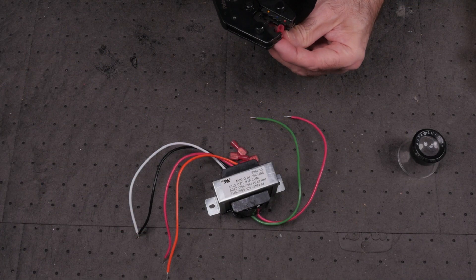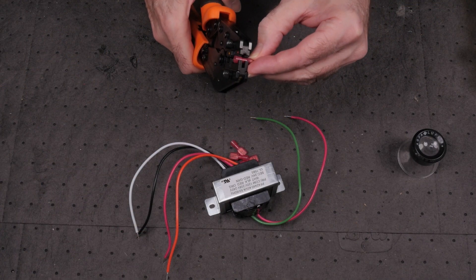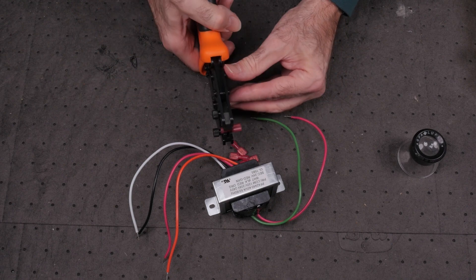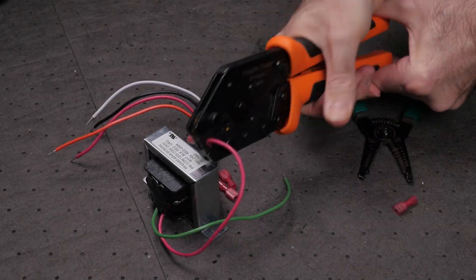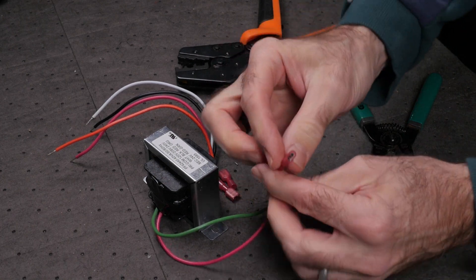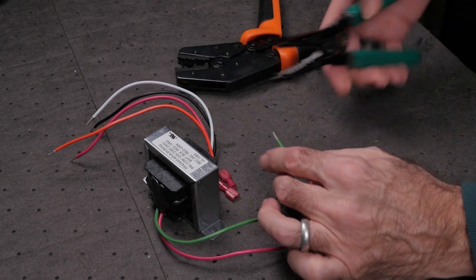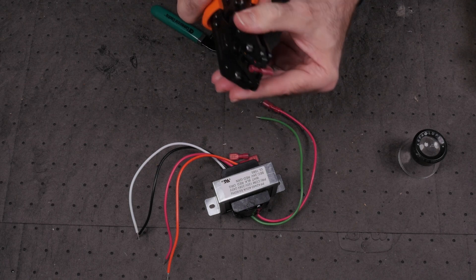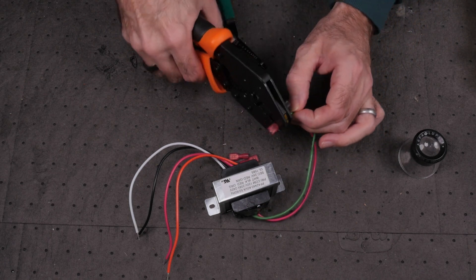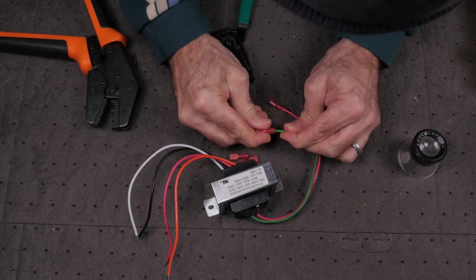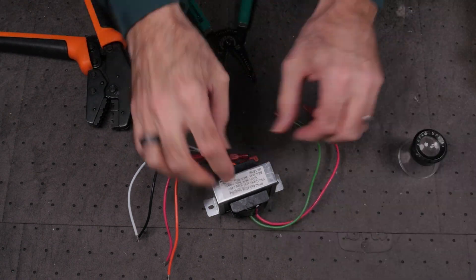I prepped the transformer by installing crimp spade connectors on the red and green secondary wires, as well as white and orange primary wires. I made sure to give each connector a good solid pull to make sure a reliable crimp was achieved. Since the black and red wires on the primary side will not be used, I sealed off the ends with heat shrink tubing to prevent contact with anything inside the heater chassis.